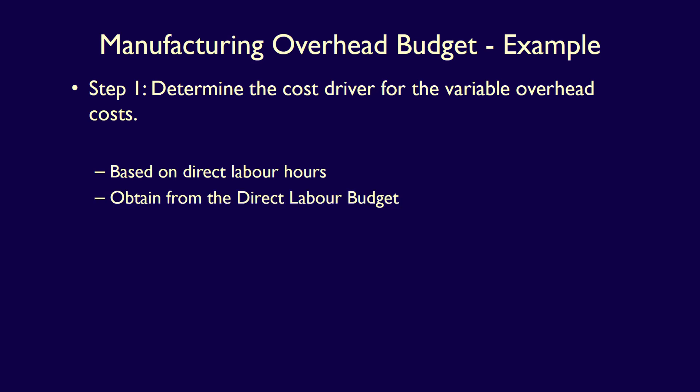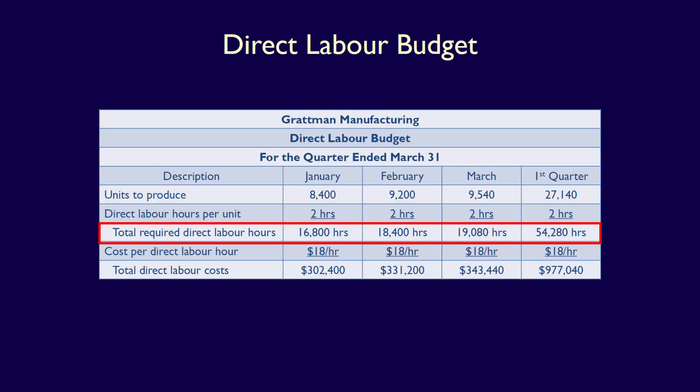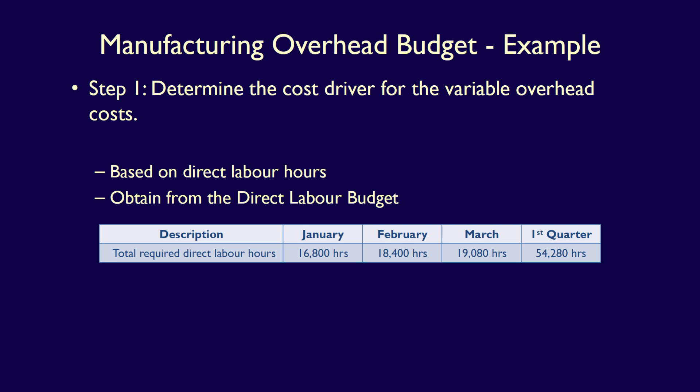We will obtain the direct labour hours from the direct labour budget. The total required direct labour hours are 16,800 hours in January, 18,400 hours in February, 19,080 hours in March, and 54,280 hours in the first quarter. Note that the variable costs may have a different cost driver, such as direct labour costs, machine hours, or even units produced, but for Gratman Manufacturing we're using direct labour hours.